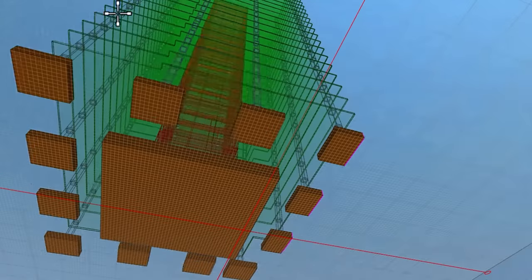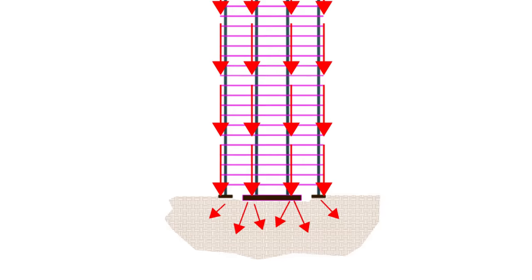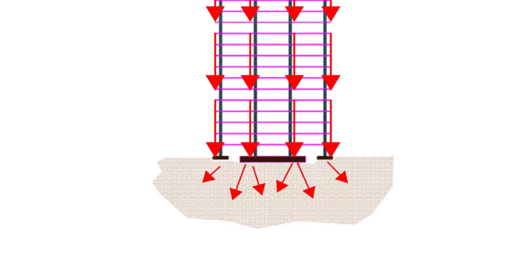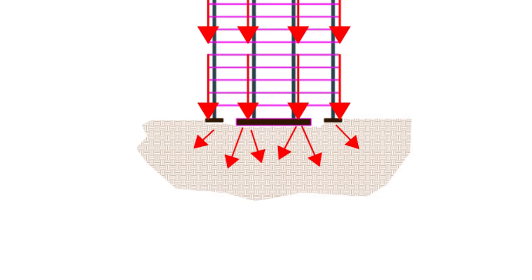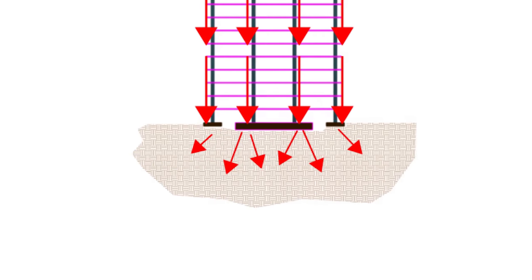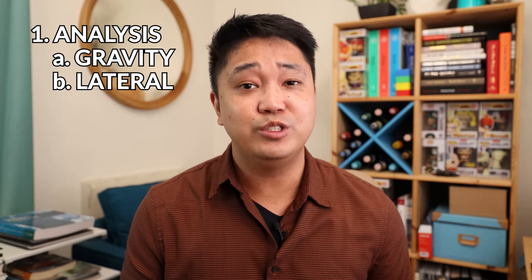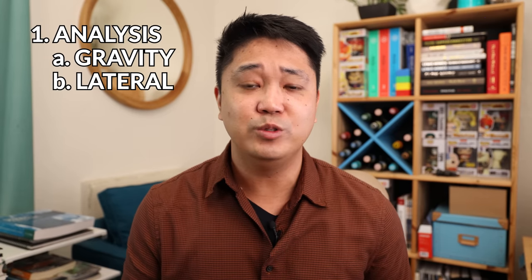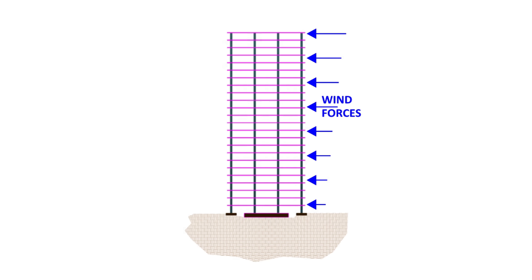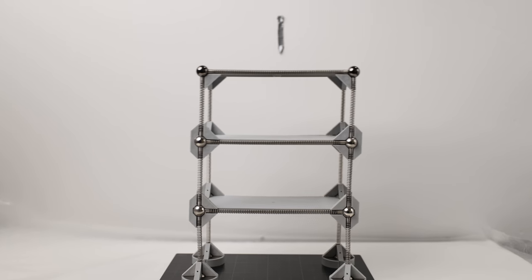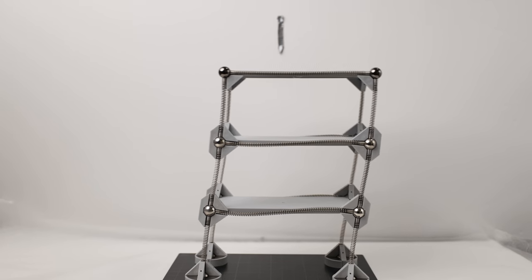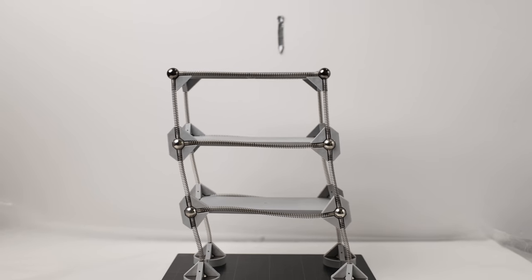Once all the building loads go to the foundations, the foundations transfer the building loads to the soil. By completing this load path — getting all the building loads to the soil — that's how we know the building is going to be stable and stand up. The second type of loads are lateral loads. Unlike gravity loads, these are loads that apply horizontal forces trying to push or tip the building over, such as wind, earthquakes, or even tsunamis.